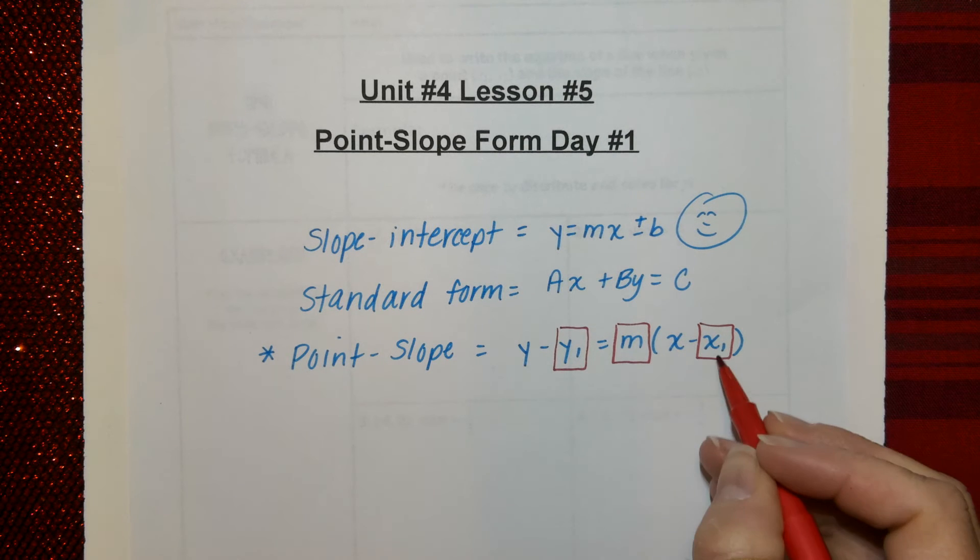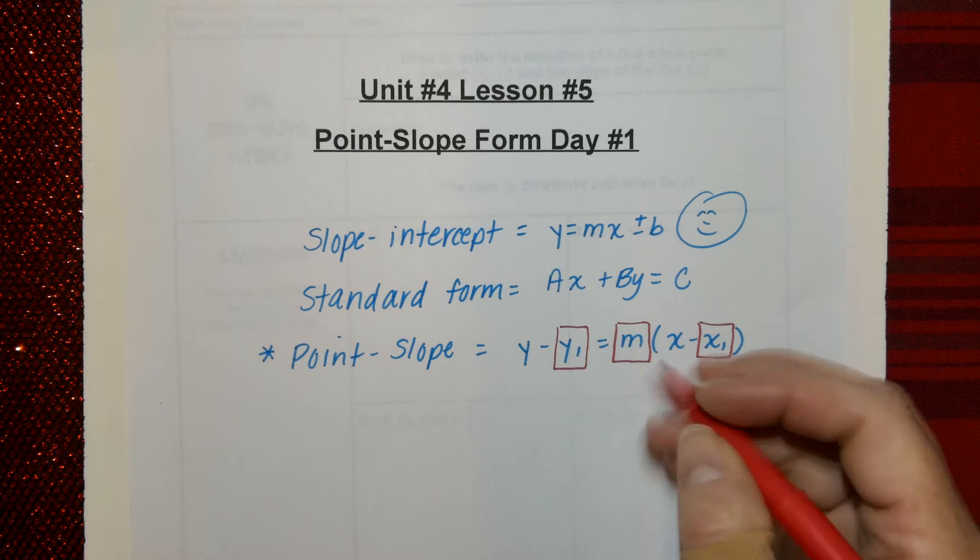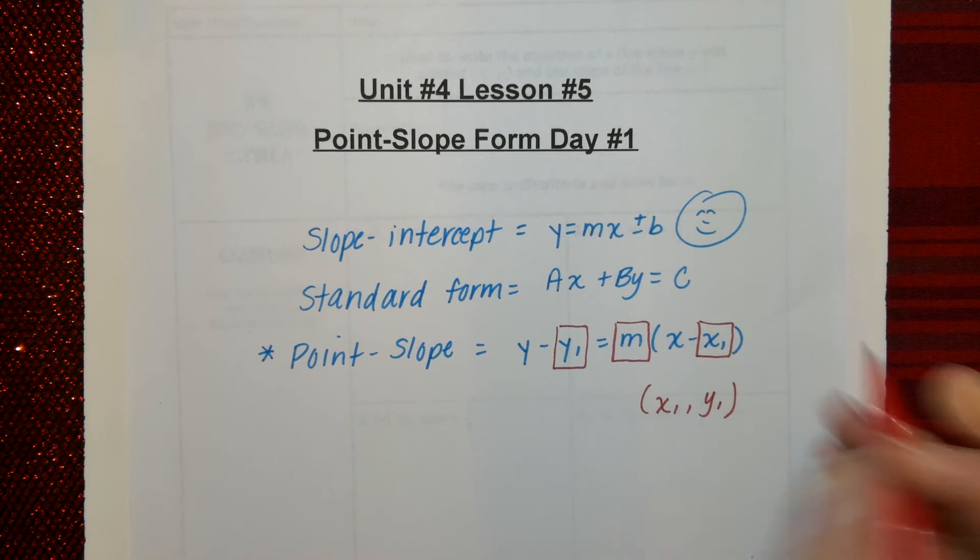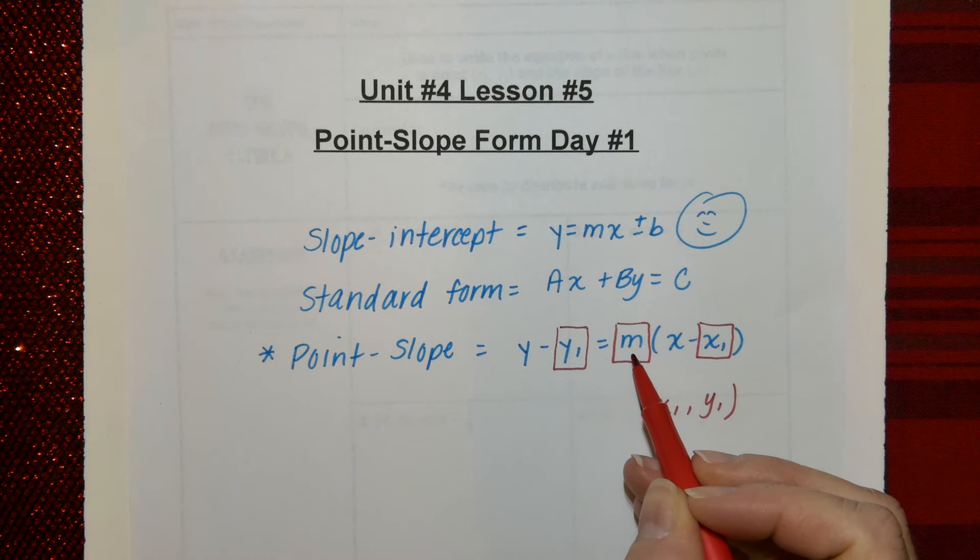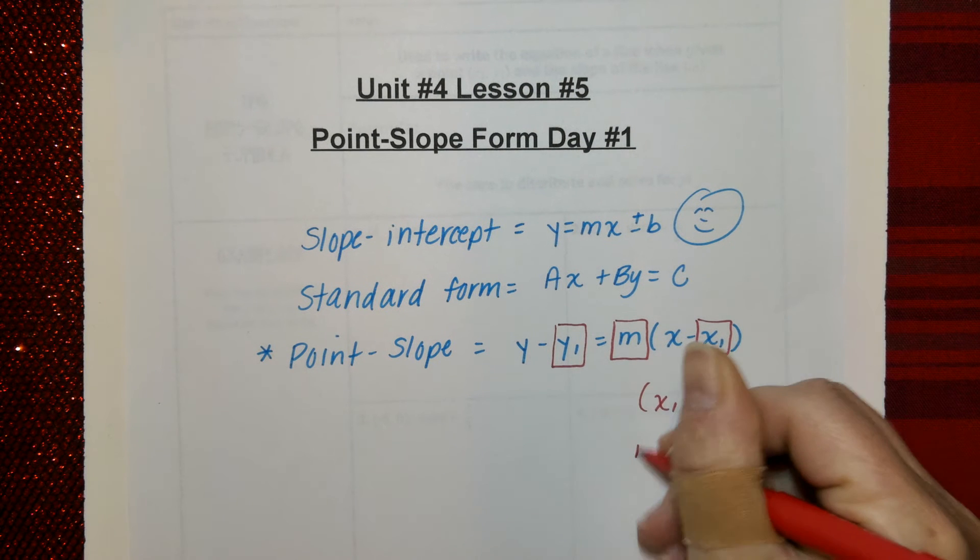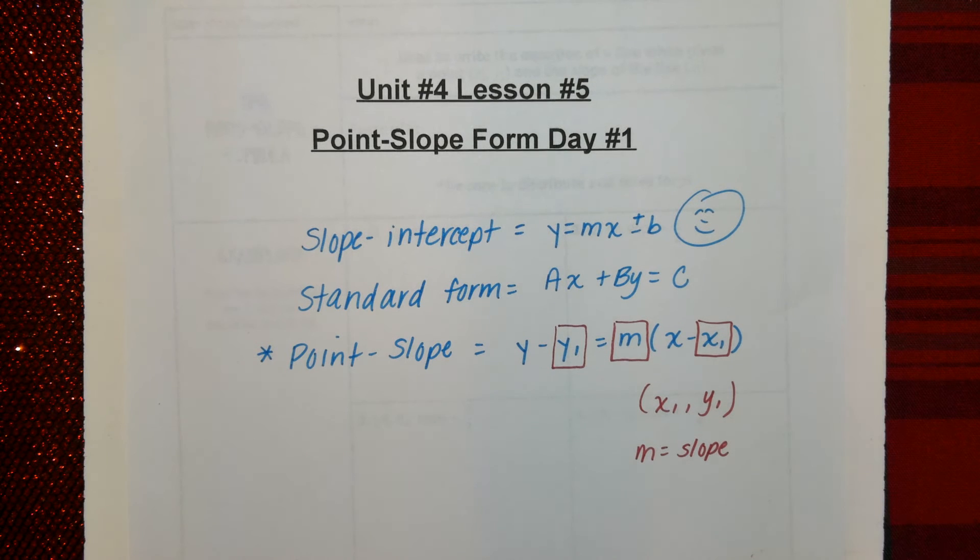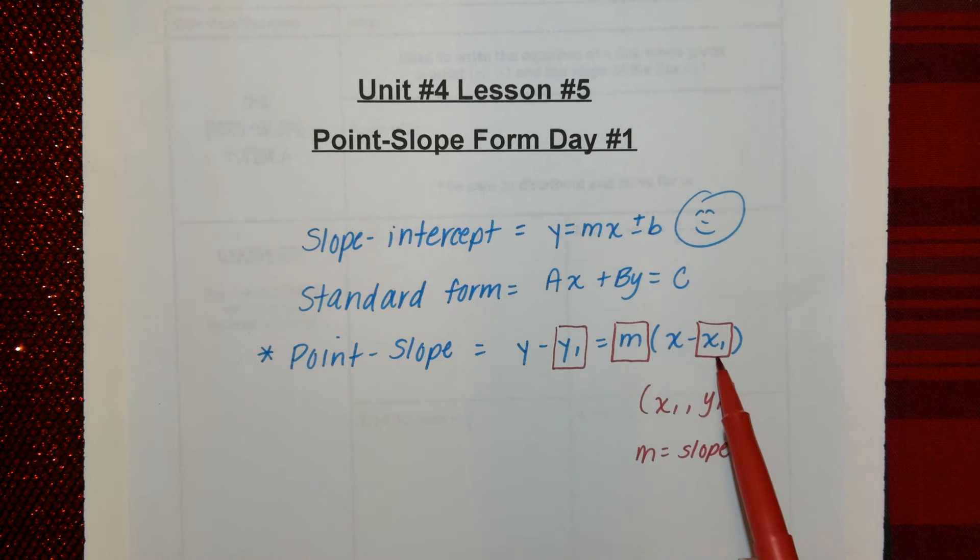But essentially, you are plugging in a point, hence the X1 and Y1. That's going to come from an ordered pair. And you're plugging in a number here in the M position. And don't forget that M is equal to the slope, which you will be given today.